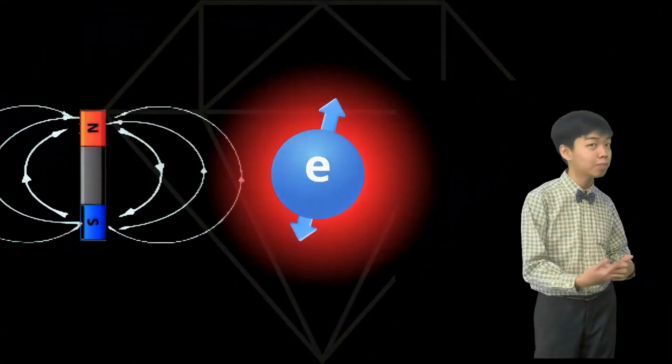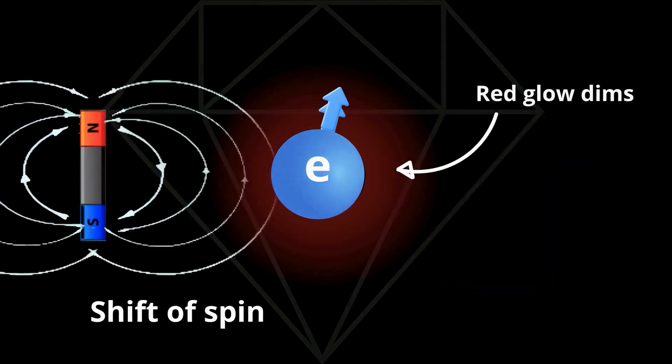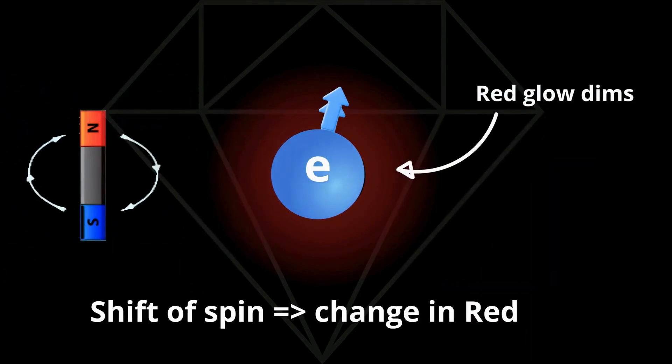Here's the physics behind it. The NV Center's electron spin shifts when a magnetic field is present. Scientists can read that shift because it changes the intensity of the red glow. So how do we detect cancerous cells? We look at the difference in the red light.